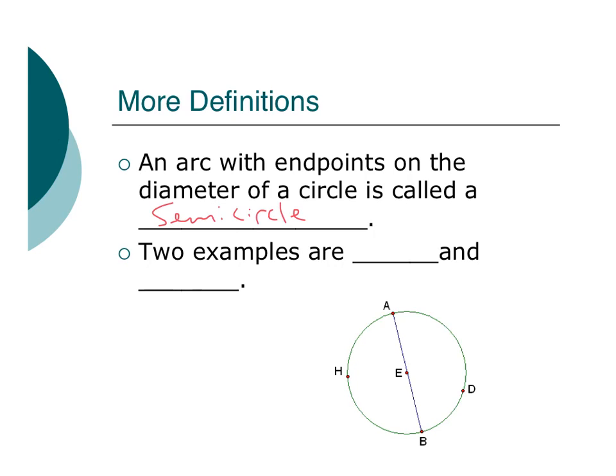Two examples of the semicircle over here in this diagram would be AHB, with the arc over it, or ADB. ADB.